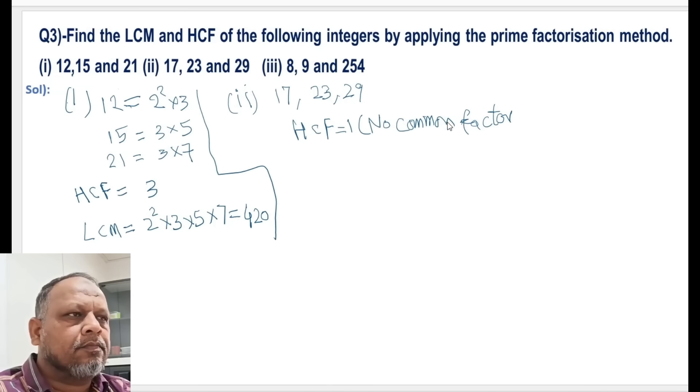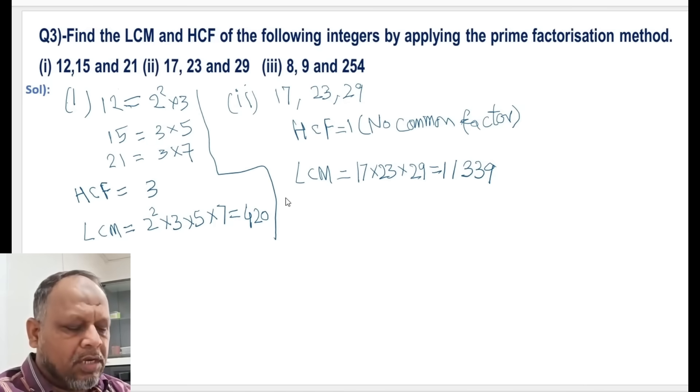And LCM will be the multiple of all three: 17 multiplied by 23 multiplied by 29, and it will be equals to 11,339. So we have solved the second bit also.